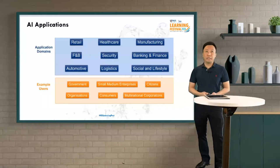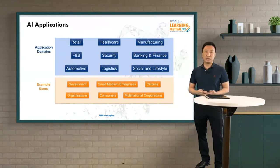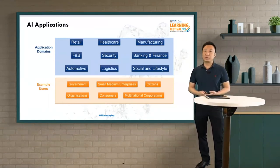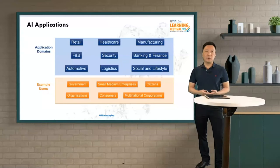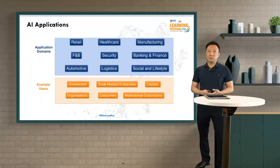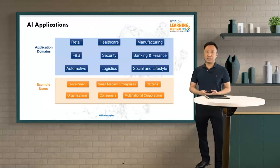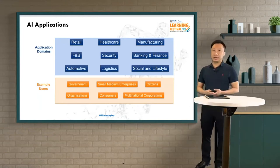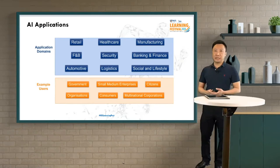AI applications have found themselves in many domains and a wide variety of areas. For example, in retail and F&B, one could use AI to forecast next month's sales for more efficient optimization of resources. In the security domain, one could use computer vision to detect anomalies from surveillance or CCTV data. For social and lifestyle, a good example would be chatbots and virtual assistants — things like Amazon Echo, Google Home, and Apple Siri.